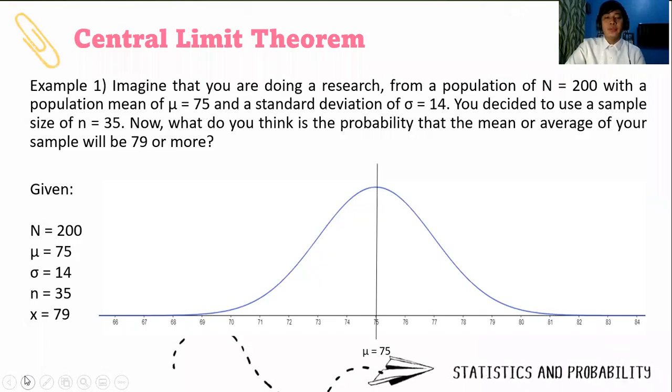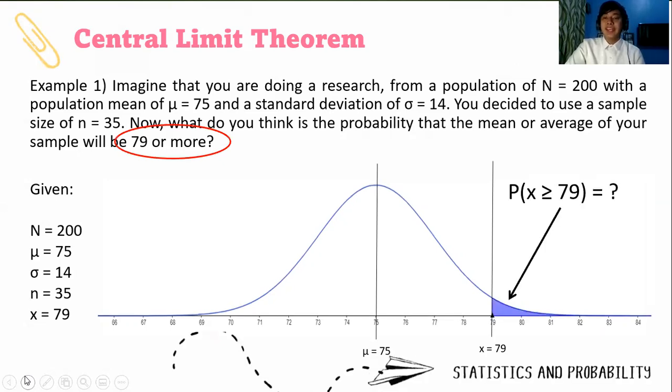μ is 75, so you locate it in the middle, and then locate our raw score x which is 79. 79 or more means greater than, so we shade this part of the distribution. Look at the blue shaded part. We shaded the right side.